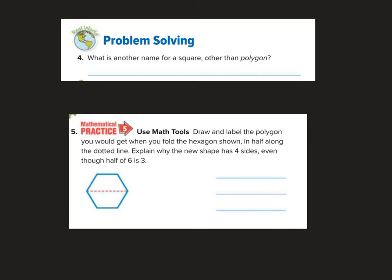So a square is a polygon because all of these shapes we're talking about are technically polygons. Triangle is a polygon, quadrilateral is a polygon, hexagon is a polygon. If we're talking about a square, how many sides does a square have? It has four. So another name for a square other than polygon could be quadrilateral. Quadrilateral is another name for a square because it has four sides.